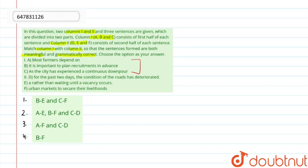So, we have here column 1, which are three sentences A, B and C. And here column 2, which are sentences D, E and F. So, we have to join these two columns to form sentences which are meaningful and grammatically correct.